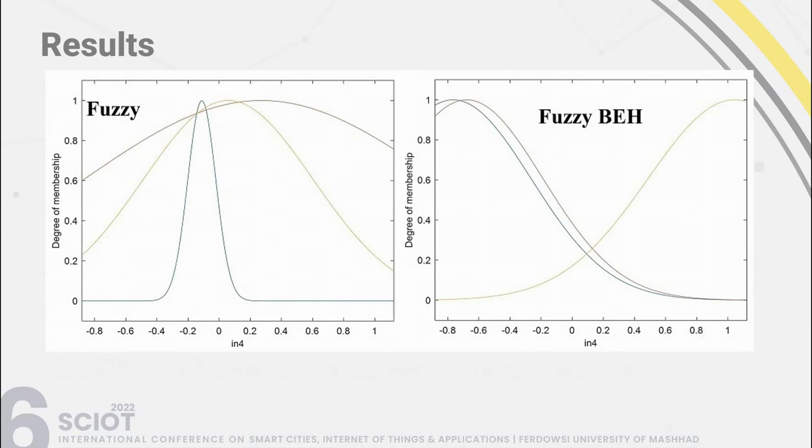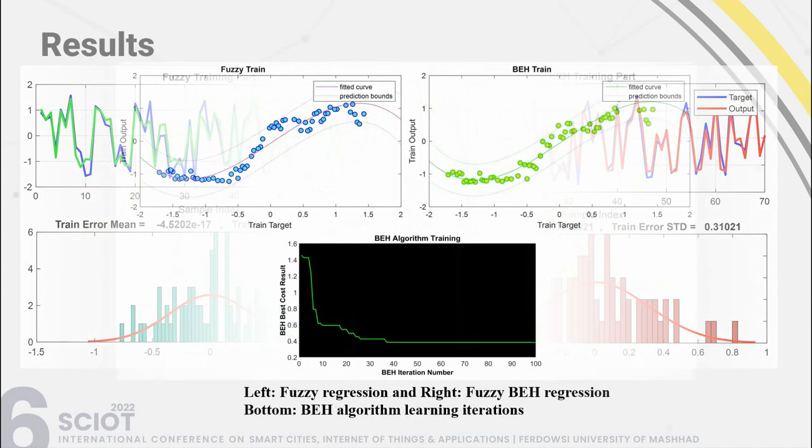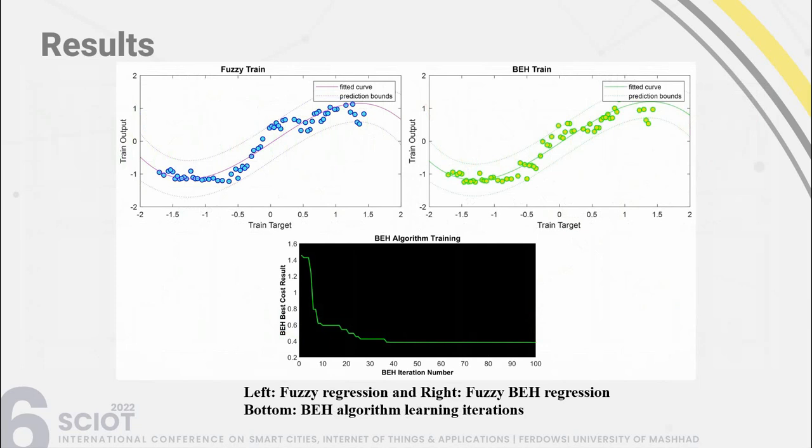On the left, the fuzzy membership function is shown, and on the right, the fuzzy training result on regression task is shown alongside the fuzzy BEHA training result. The proposed method achieves lower error. At the top left, fuzzy training on non-linear regression on the return data is shown, and at the top right, fuzzy BEHA training. At the bottom, the BEHA algorithm is shown working for the regression task with good convergence.